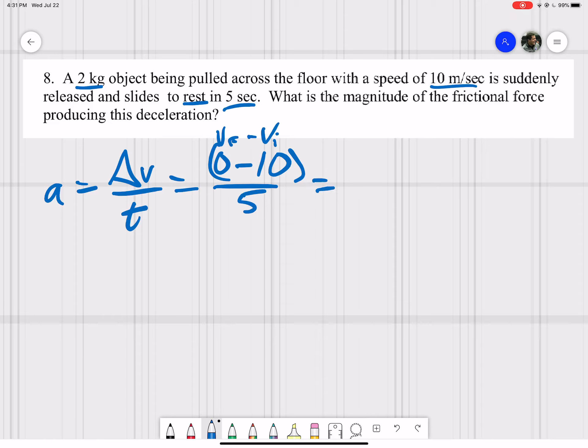So your answer will be negative 10 over 5 or a negative 2 meters per second squared. But that's not the final answer.